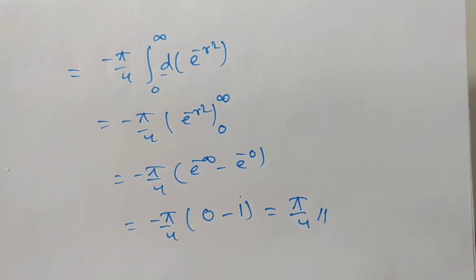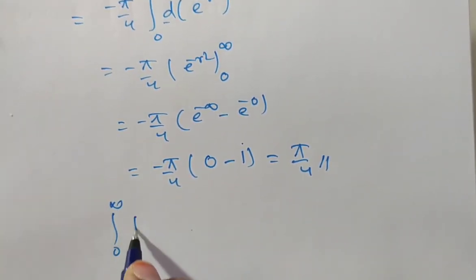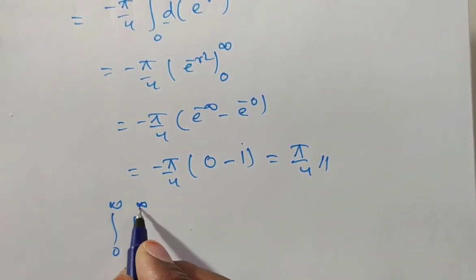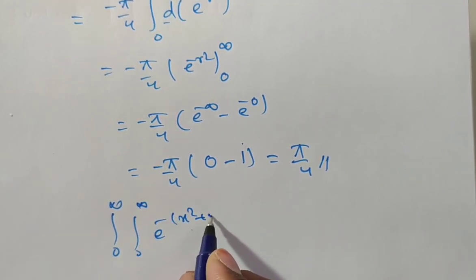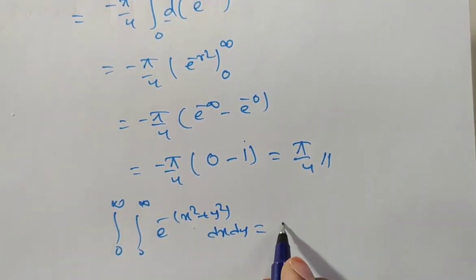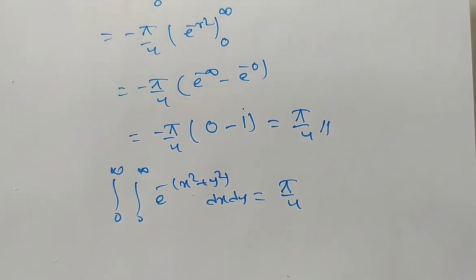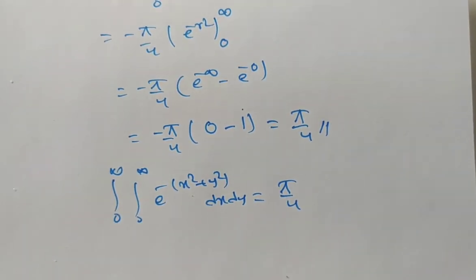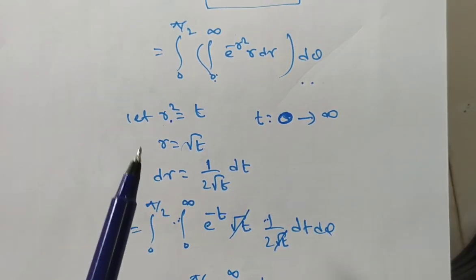Friends, the value of the integral from 0 to infinity, integral from 0 to infinity of e to the power of minus x squared plus y squared, dx dy is pi by 4. Same problem, I have done in another method. In method 2, I have just changed the variable.